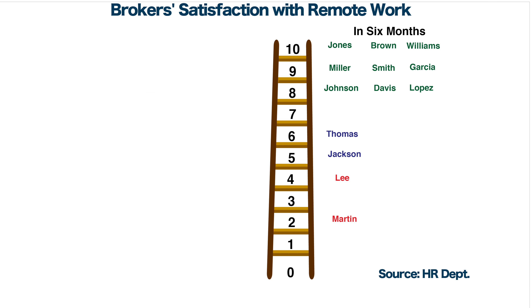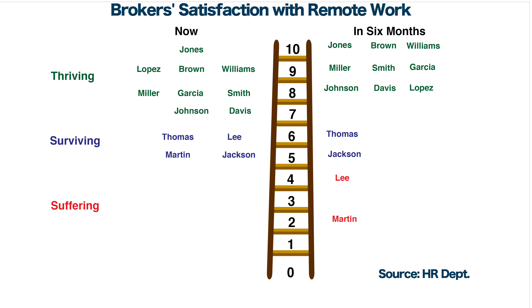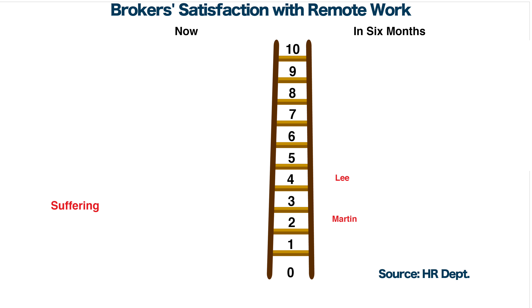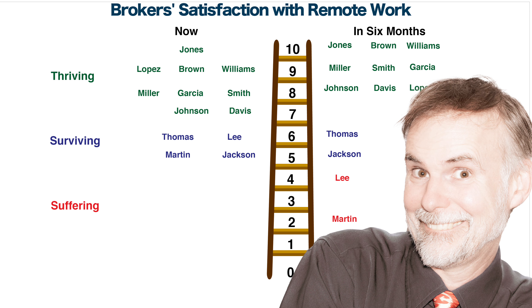The right side shows the brokers' future outlook. Also, you color-coded the brokers' names according to whether they are thriving, surviving, or suffering while working remotely. Now you're ready to write a three-part description and analysis of the Cantril Ladder for the president of Steadfast, updating her on the brokers' current outlook on remote work and the future viability of this work arrangement.